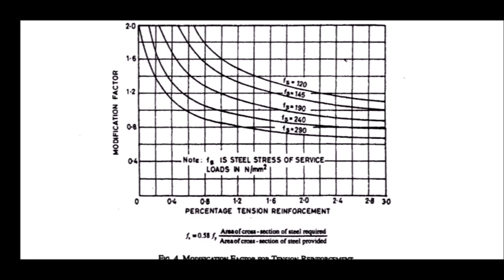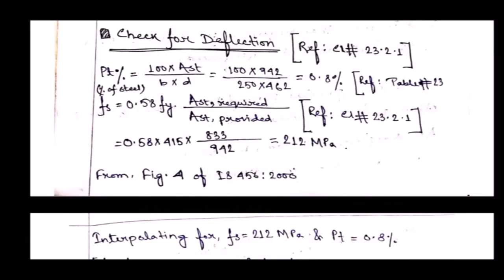Let's solve it out. First, we find out the percentage of steel: AST / (B × D) × 100 = 100 × 942 / (250 × 462) = 0.8%. Now, Fs = 0.58 × Fy × (AST required / AST provided) = 0.58 × 415 × (833 / 942) = 212 MPa.